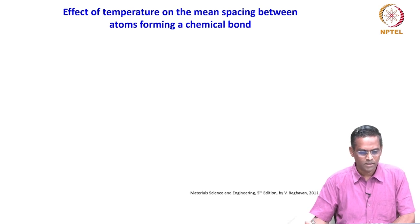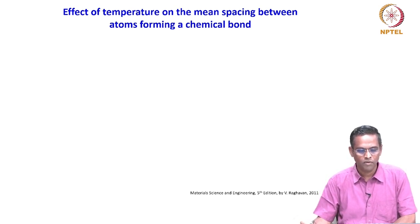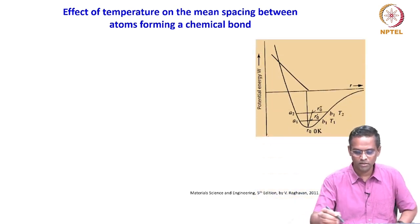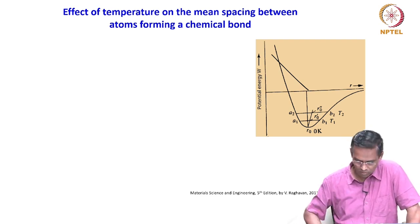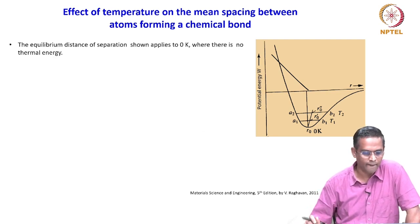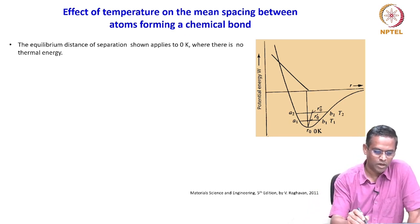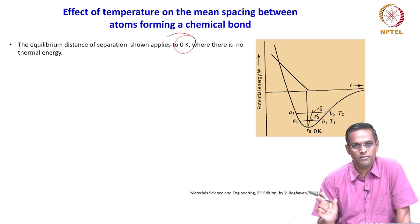One last aspect to cover before stopping today: the effect of temperature on the mean spacing between atoms forming a chemical bond — very important. What happens when temperature rises? Again we use the potential energy versus separation curve. The equilibrium distance shown applies to 0 Kelvin — whatever we talked about for R₀, the equilibrium position is referred to 0 Kelvin.